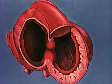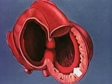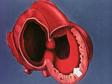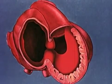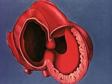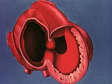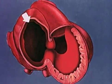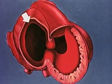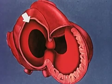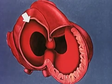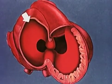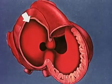From the interventricular ridge, a proliferating muscular septum advances across the common ventricle toward the base of the heart. Simultaneously, the interatrial septum rapidly grows toward the endocardial cushions, progressively constricting the foramen between the atrial chambers, the foramen primum.